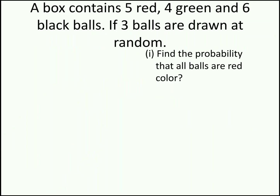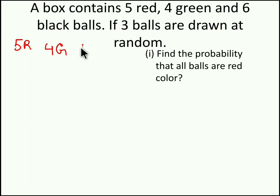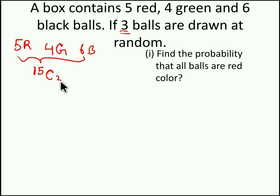A box contains 5 red, 4 green and 6 black balls. If 3 balls are drawn at random, find the probability that all balls are red color. So totally we have 15 balls — 5 red color balls, 4 green color balls and 6 black color balls. From this we have to select 3 balls, so 15C3 is our total sample space.